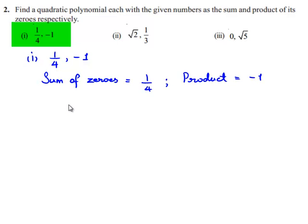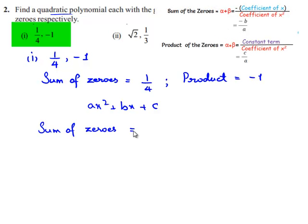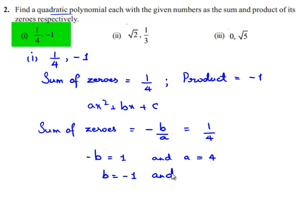Let us assume the quadratic polynomial as ax² + bx + c. We know that the sum of zeros is equal to minus b by a. But the given sum of the zeros is equal to 1/4. So we can say that minus b is equal to 1 and a is equal to 4, that is b is equal to minus 1 and a is equal to 4.